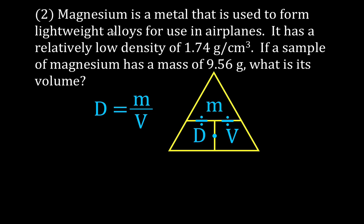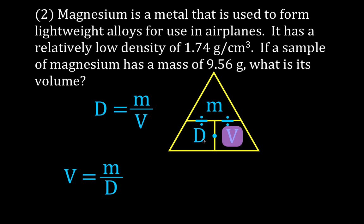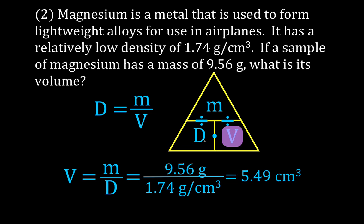Magnesium is a metal used to make alloys for airplanes and has a relatively low density of 1.74 grams per cm³. We have a mass of 9.56 grams and want to find the volume. Using the magic math triangle, volume equals mass divided by density: 9.56 divided by 1.74. The grams cancel, leaving us with 5.49 cubic centimeters as the volume of that piece of magnesium.